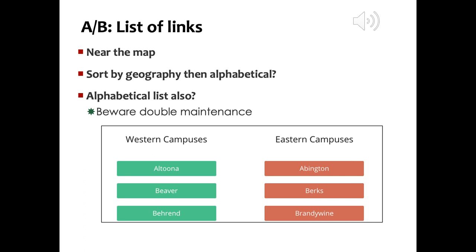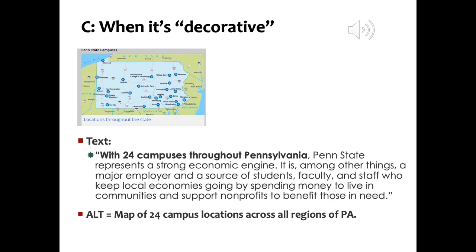Is a map ever decorative? Sometimes yes. Given the paragraph about 24 campuses throughout Pennsylvania, Penn State represents a strong economic engine — it is, among other things, a major employer and a source of students, faculty, and staff who keep local economies going. It's clear that the map is mostly there to support the point of view of how important the campuses are to the state of Pennsylvania. A simple alt text such as 'map of 24 campus locations across all regions of Pennsylvania' would probably be sufficient, especially if there's a link pointing to the campus location page.